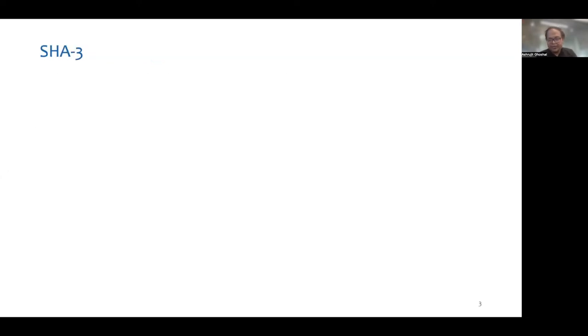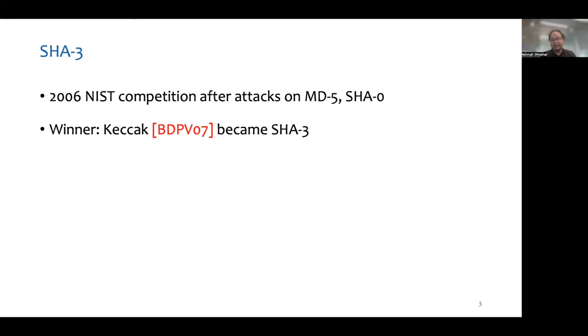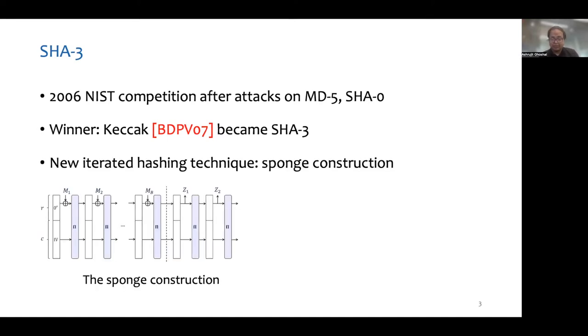After some proposed attacks against MD5 and SHA-0 in 2006, NIST started a competition to standardize a new hash construction. And after almost a decade, Keccak emerged as the winner. The Keccak family is based on the sponge construction, which is a novel alternative to the Merkle-Damgard design.